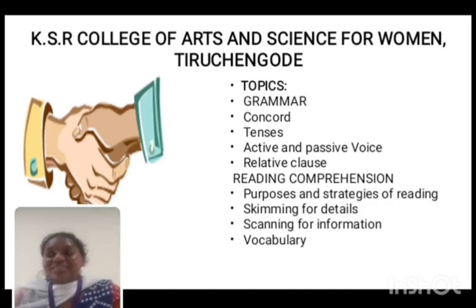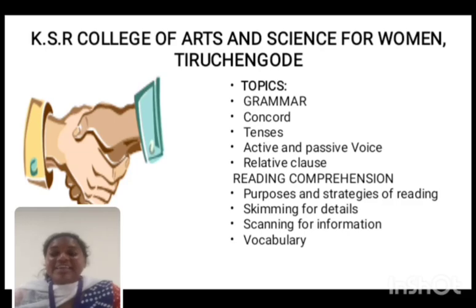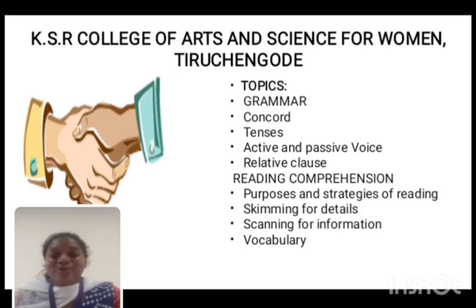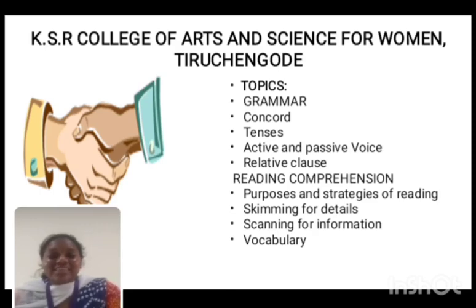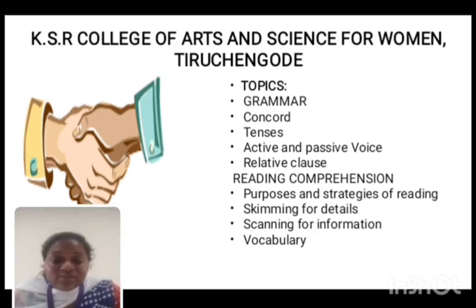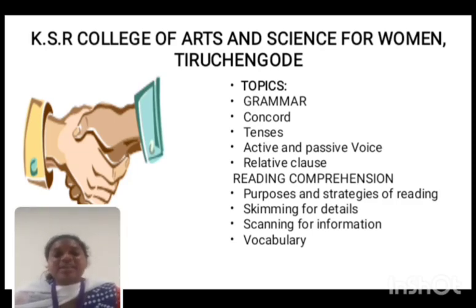Let us see grammar. Unless we master grammar, we cannot speak or write effectively — that is really important. Grammar is a systematic study of a scientific method which provides us information and guidance necessary to learn a language. The science of grammar teaches us how language is spoken. Rules and regulations are also available in every grammar of every language. Topics like concord, tense, active voice and passive voice are also part of grammar.